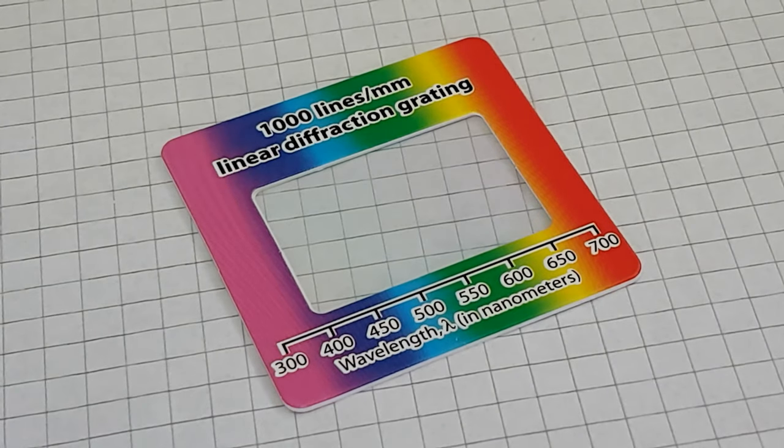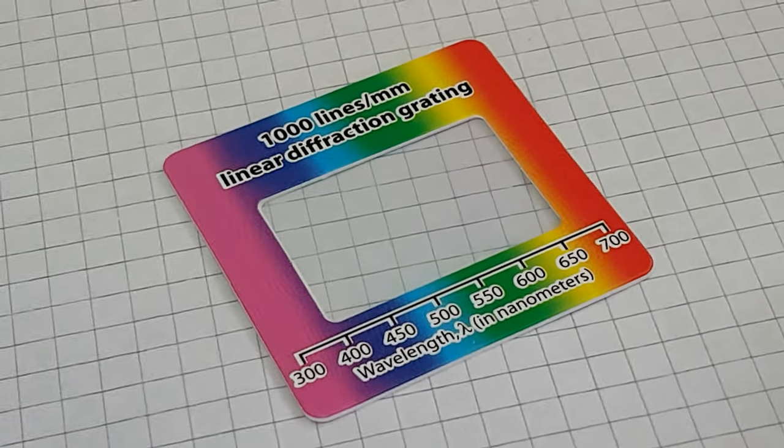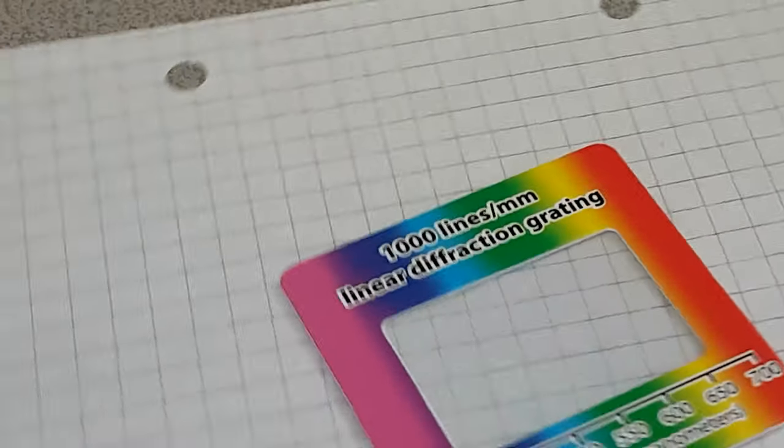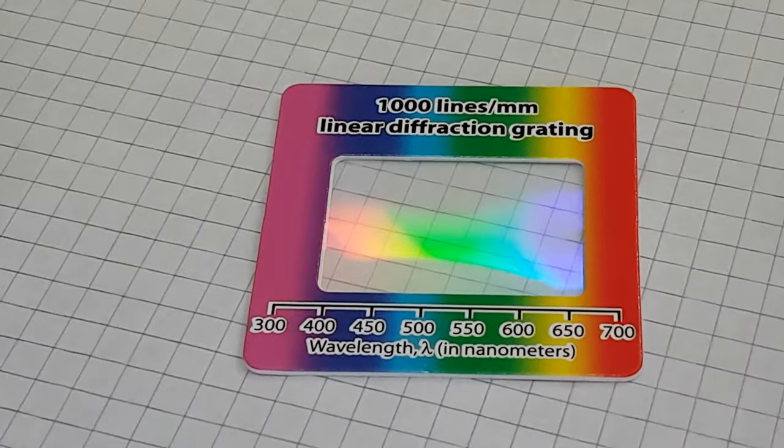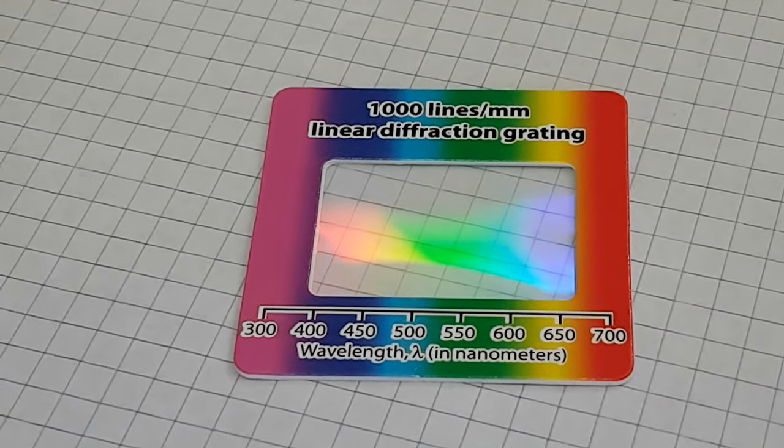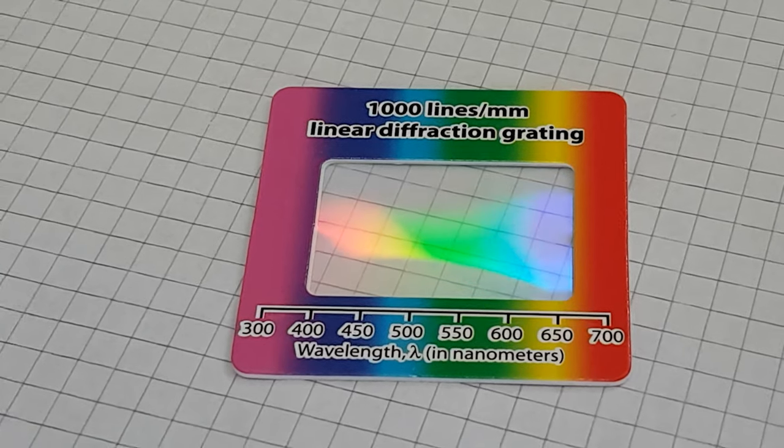I just want to show you here, I've got some light coming through the window, and perhaps I can get it to reveal itself. There we go, and so you can see this is daylight, so we have the full spectrum there